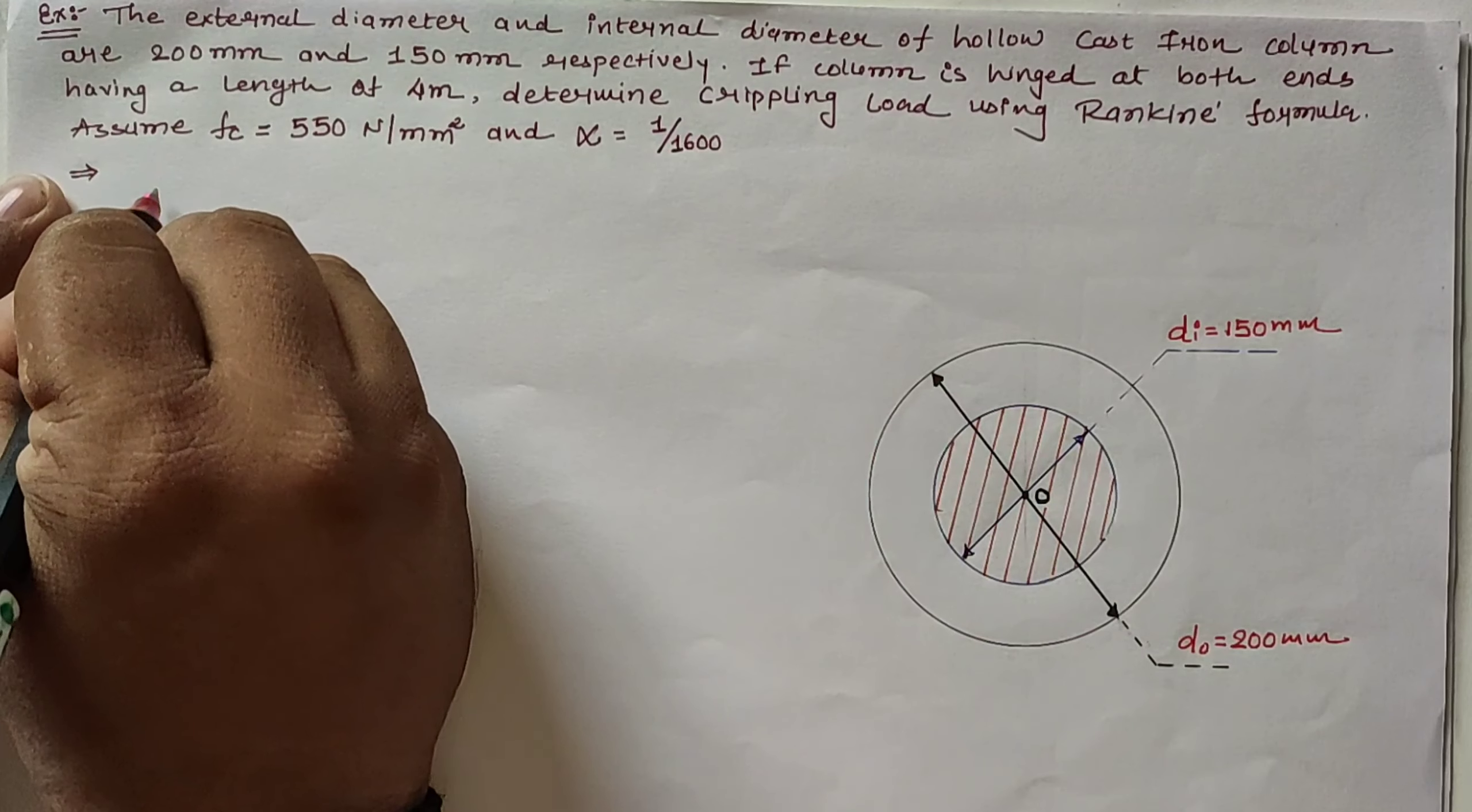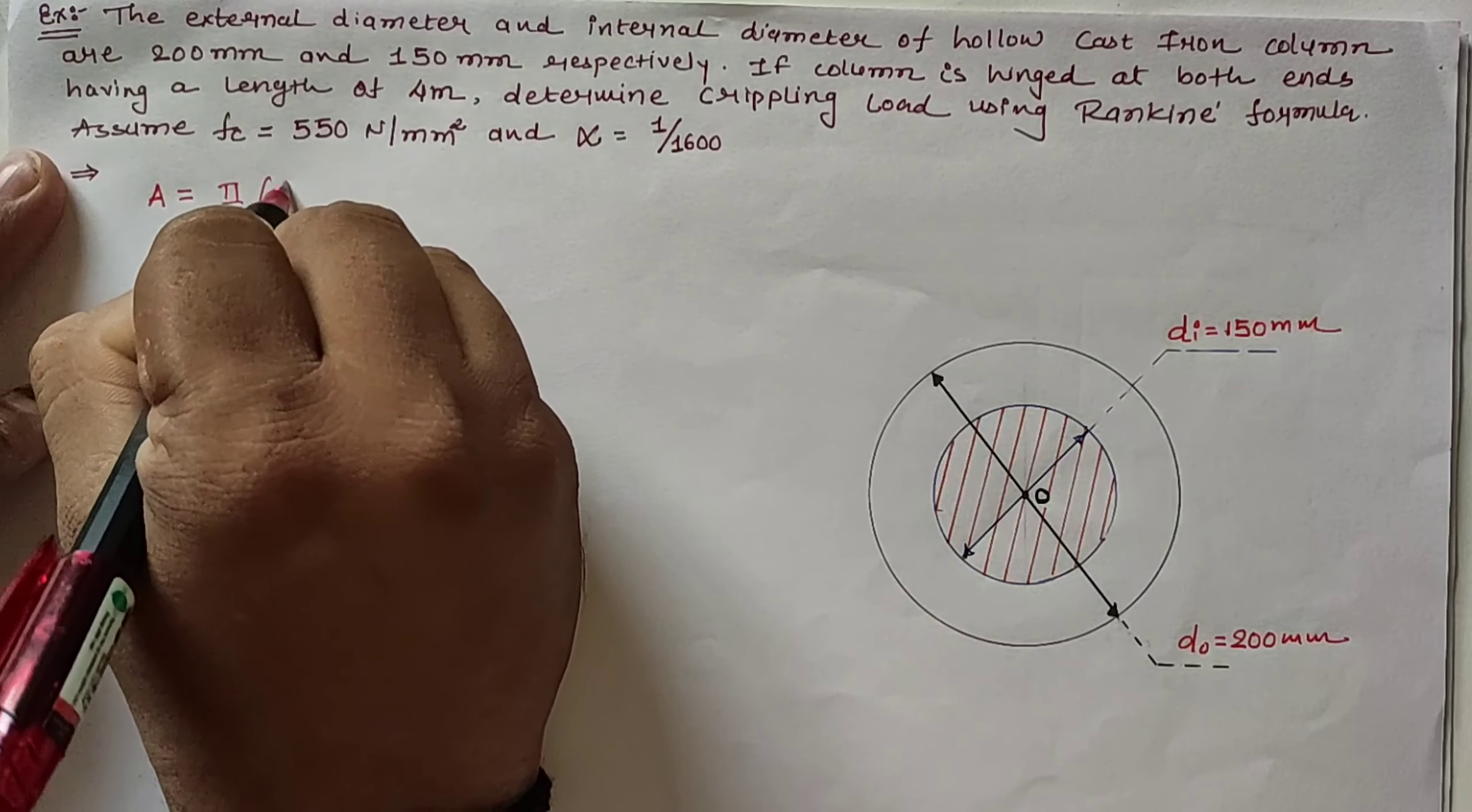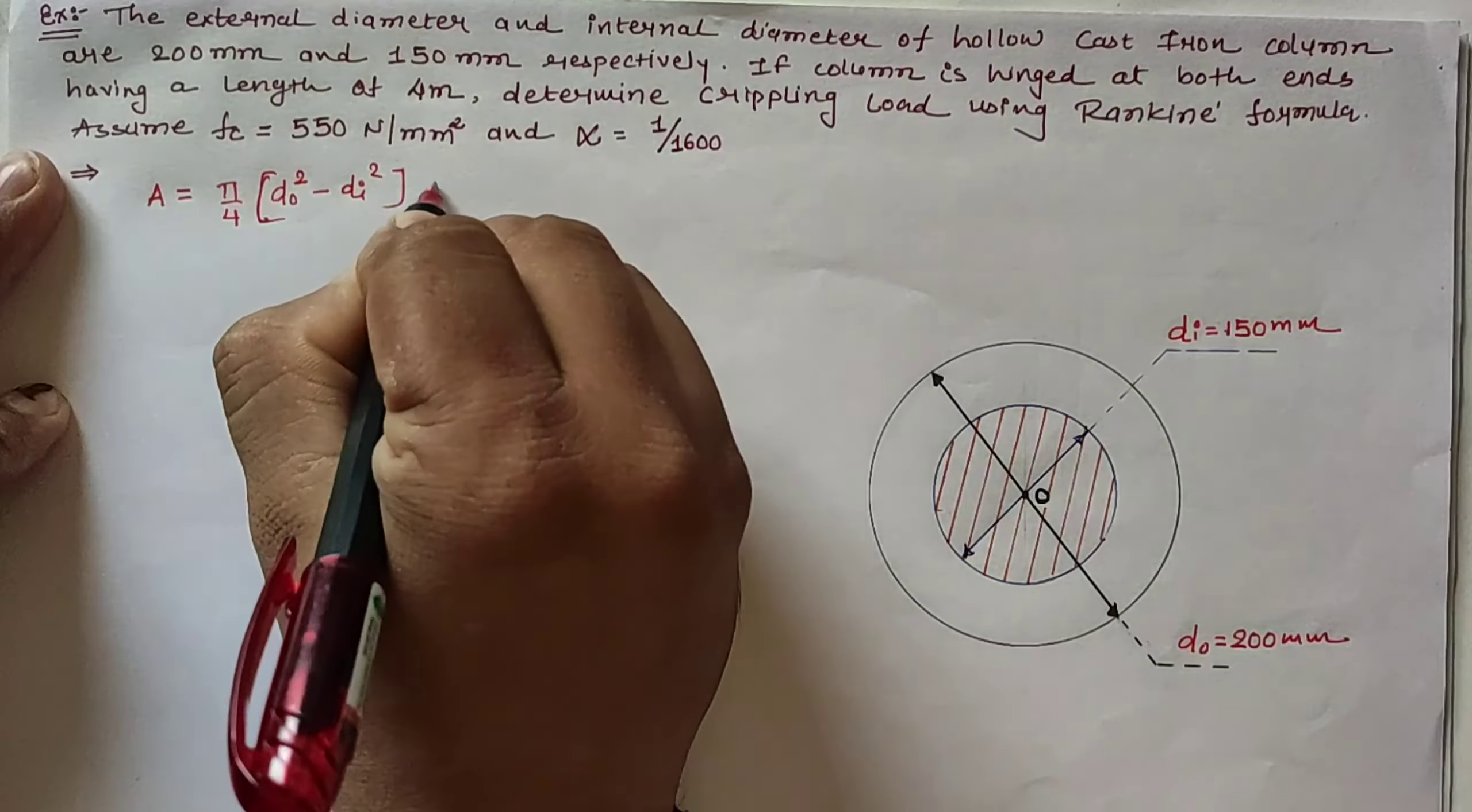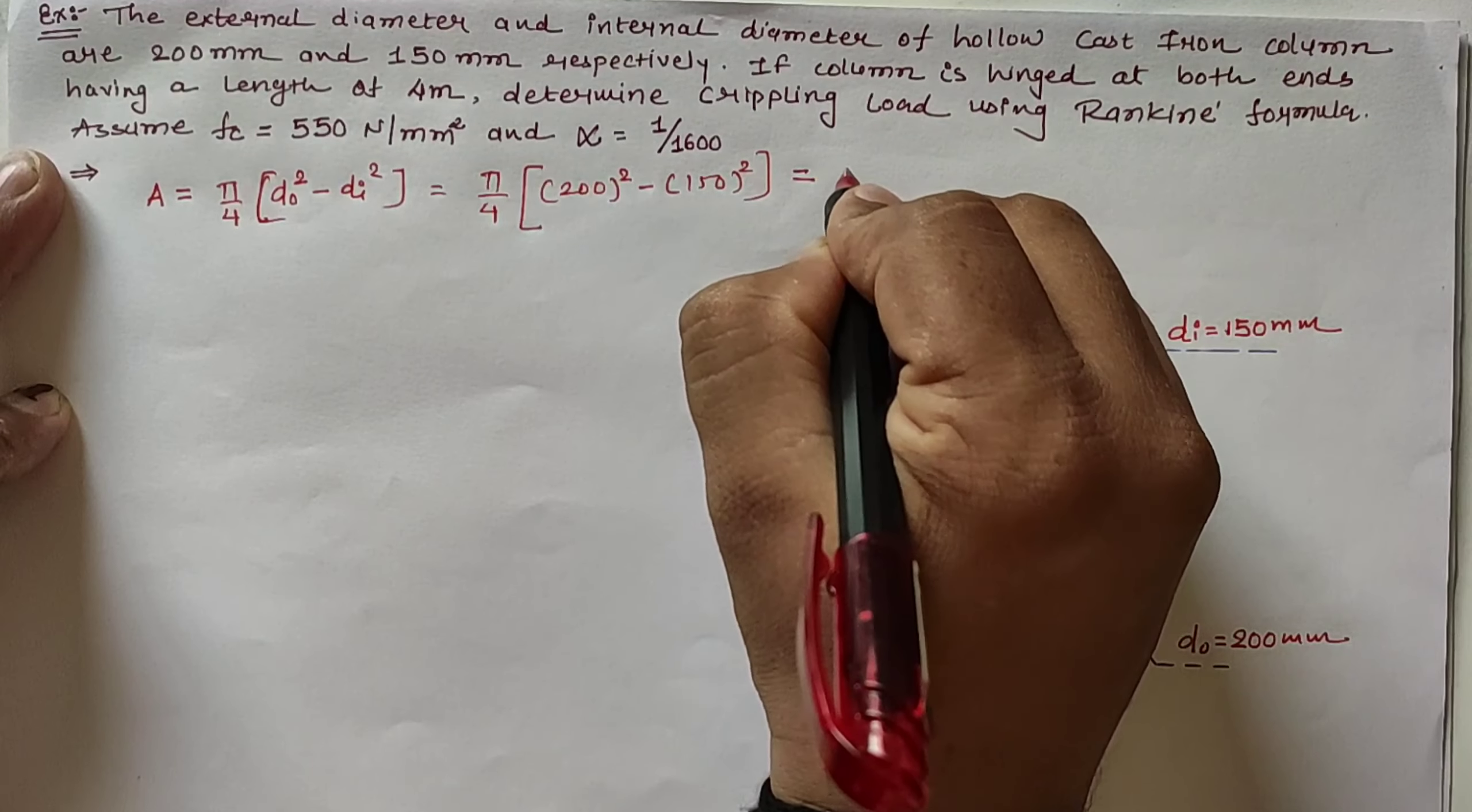From this data, we can calculate the sectional area as π/4 (D_outer² - D_inner²). So it is π/4 × (200² - 150²), which equals 13,737.5 mm².